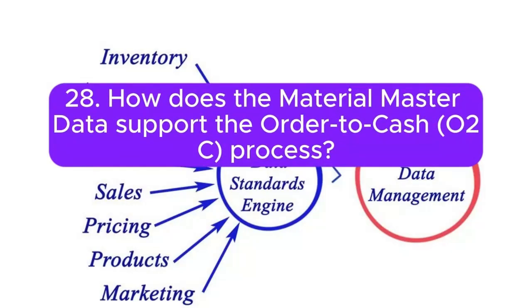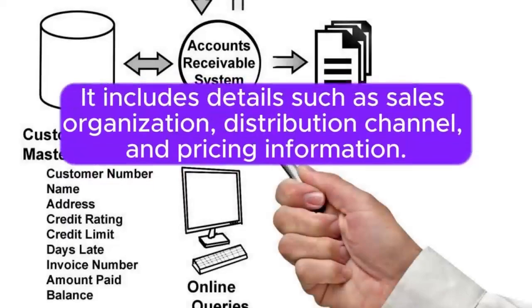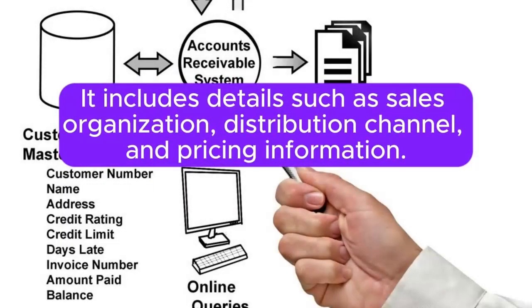Question 28: How does the Material Master data support the Order-to-Cash (O2C) process? Material Master data supports the Order-to-Cash process by providing information for sales orders, deliveries, and billing. It includes details such as Sales Organization, Distribution Channel, and Pricing Information.